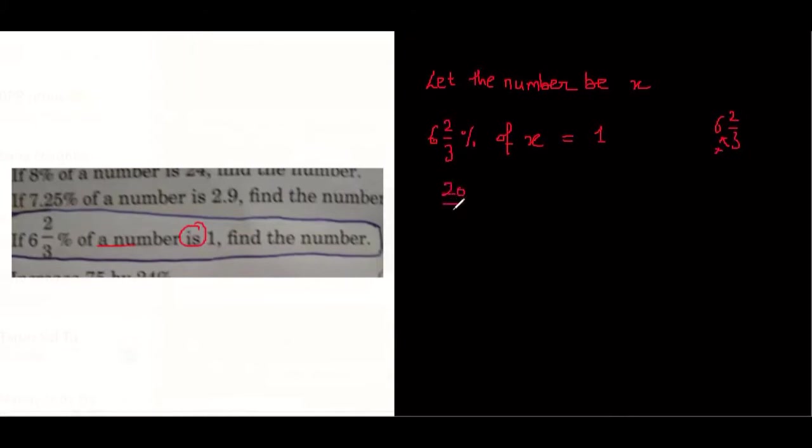And percentage, as we know, percentage means 1 upon 100. We have seen this thing in previous classes. Multiply by 1 upon 100, off means multiply, x equals to 1.